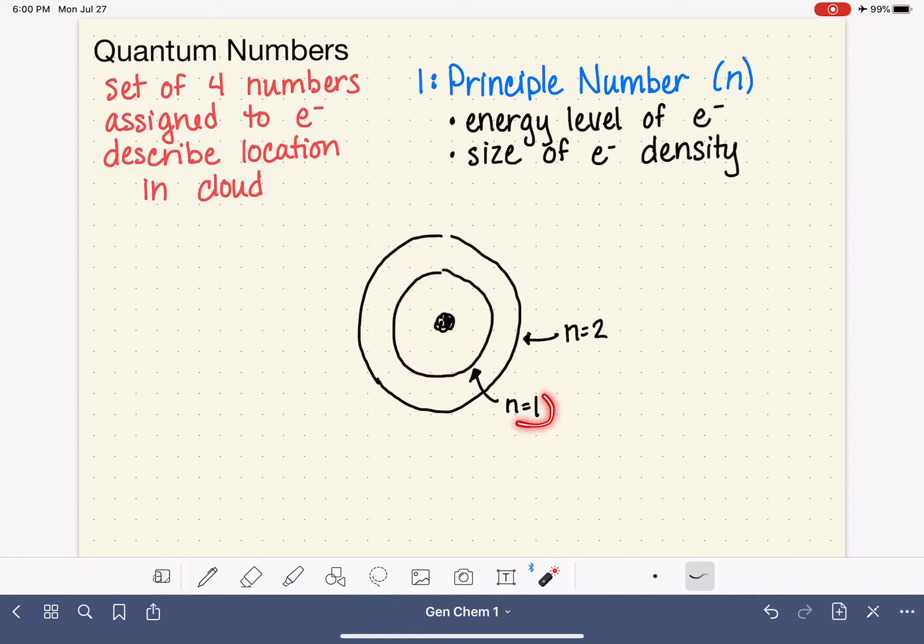Electrons that are in the n equals 1 level are restricted to occupying only this particular area of space. Electrons that are in the n equals 2 area are restricted to occupying this area of space, and so on.